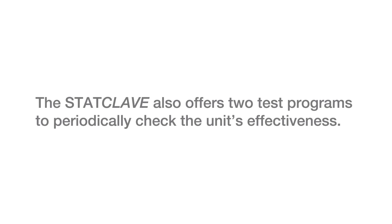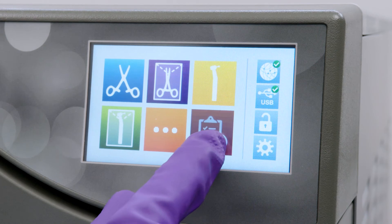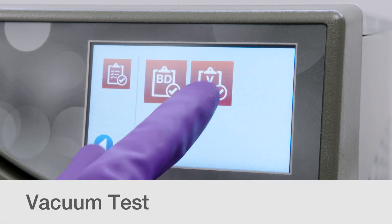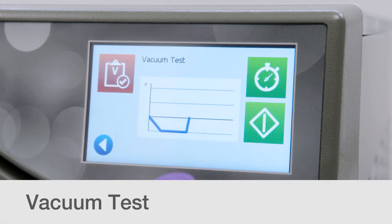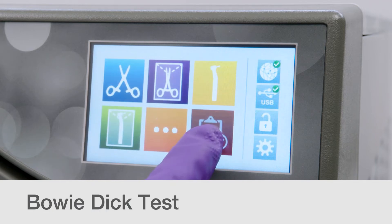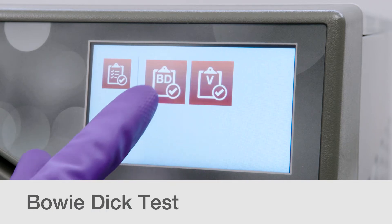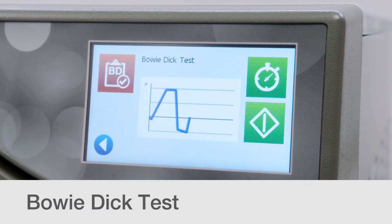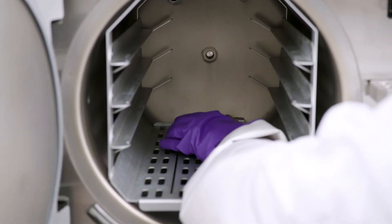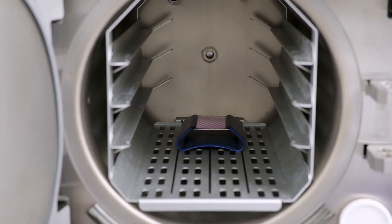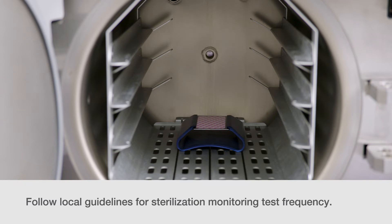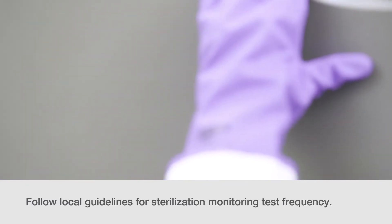The StatClave also offers two test programs to periodically check the unit's effectiveness. A vacuum test, which needs to be completed with a cold chamber. And a Bowie Dick test, which runs with only the chamber rack in place. It's done in a warm chamber with the test pack placed at the back center of the chamber. Please follow local guidelines for the required frequency for performing all sterilization monitoring tests.